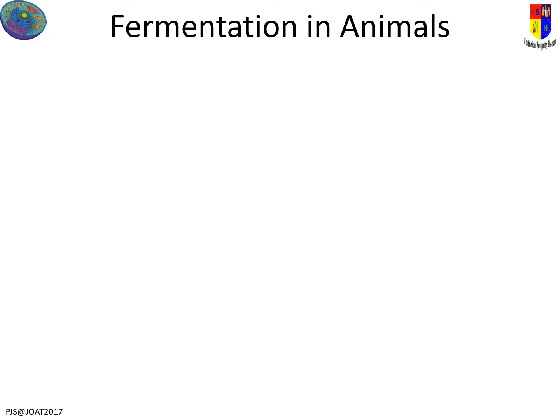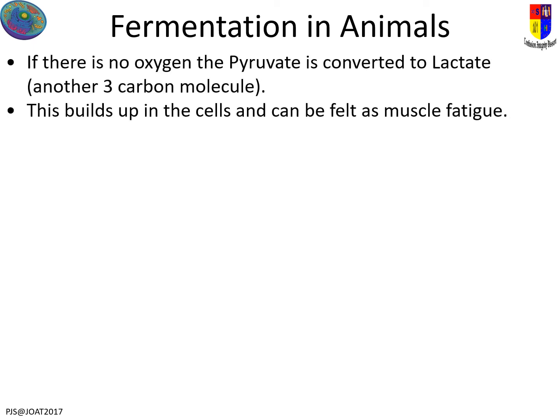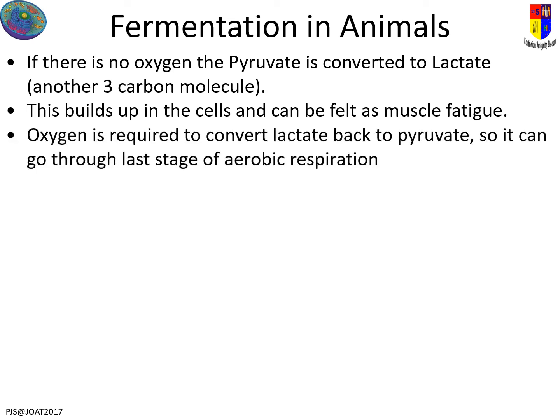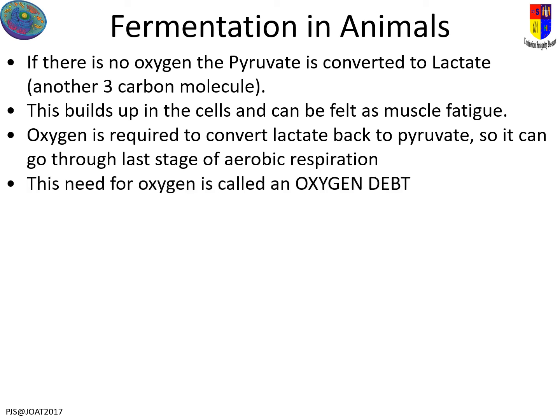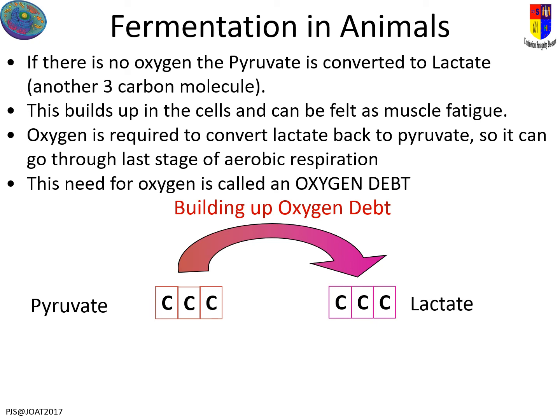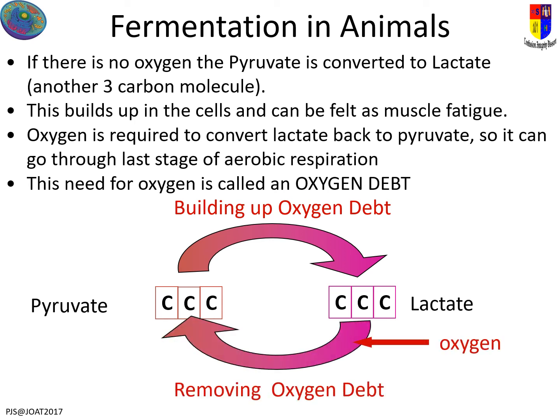In animals, if we don't have oxygen, the fermentation pathway is to take pyruvate and convert it to lactate. Pyruvate is really nasty and lactate is also unpleasant, so we can deal with it for a short time, but if it builds up it starts to cause pain — this is muscle fatigue. If we get any oxygen back, we can go back the way and change lactate back to pyruvate, then go straight into aerobic respiration. This builds up an oxygen debt, and as oxygen comes back in we repay that debt, returning to pyruvate and then into the mitochondria.